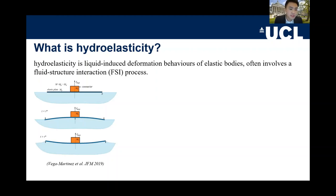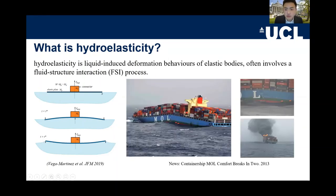This graph from JFM 2019 shows a floating body on the sea surface. When the sea is static the body is static, but when a wave comes and the wave crest passes, it moves upward. If it's an elastic body, the structure can change shape. This can be very serious — in 2013 there was an accident where a container ship broke into two parts in the middle because of this hydroelastic behavior.